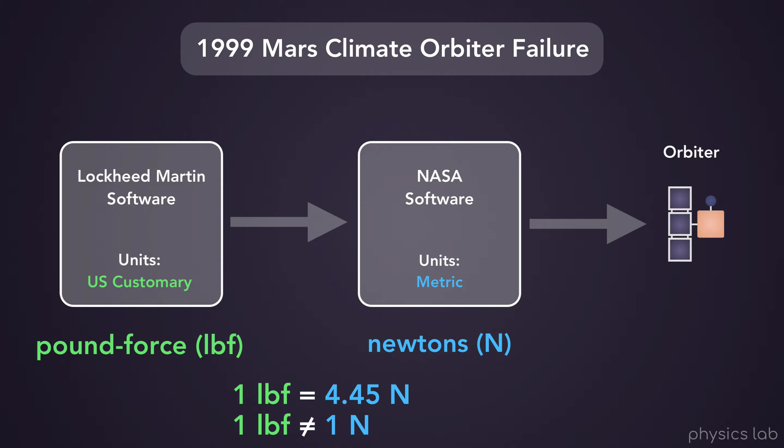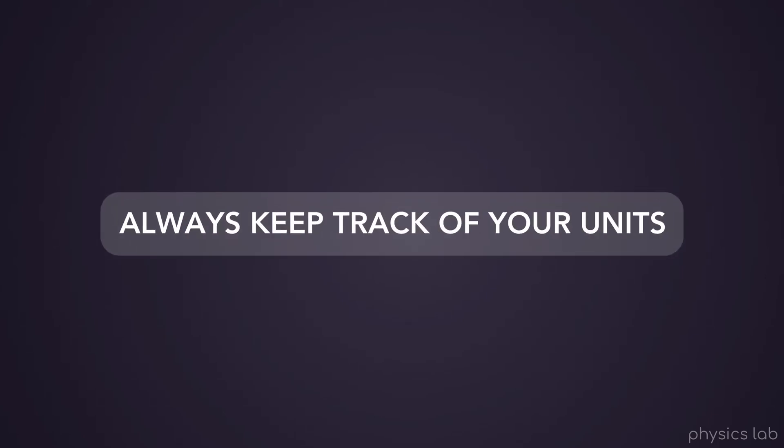This caused the orbiter's trajectory to be way off, and eventually enter the atmosphere and probably burn up or crash. The lesson here is that it's true. Always keep track of your units.